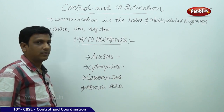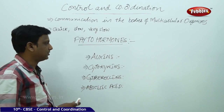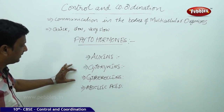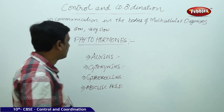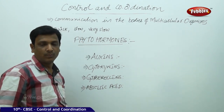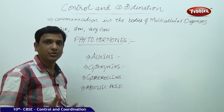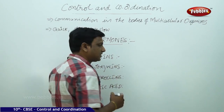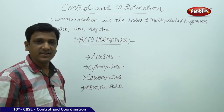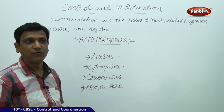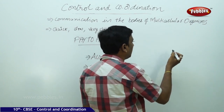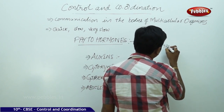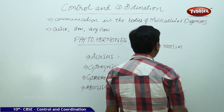Now let us see plant hormones — phytohormones — and how they help plants in various situations. The major phytohormones are auxins, cytokinins, gibberellins, and abscisic acid. The first one is auxin — a very important hormone found in plants. It helps the plant grow in height, and it is also responsible for phototropism, the response of the plant to light.